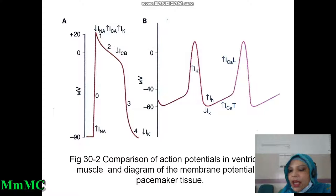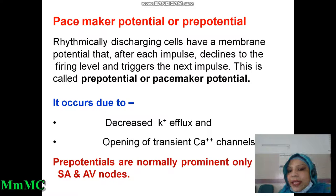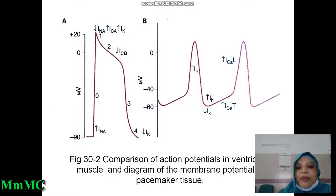There is a transient calcium channel and long-lasting calcium channel. Calcium enters through this channel and causes SA nodal depolarization. Then, by the voltage-gated potassium channel, efflux of potassium causes repolarization. Again, the potential goes downward — that is, pre-potential occurs, and again the next firing occurs. Why does this occur? Due to decreased potassium efflux and opening of transient calcium channels mainly. Pre-potentials are normally prominent only in SA node and AV node.